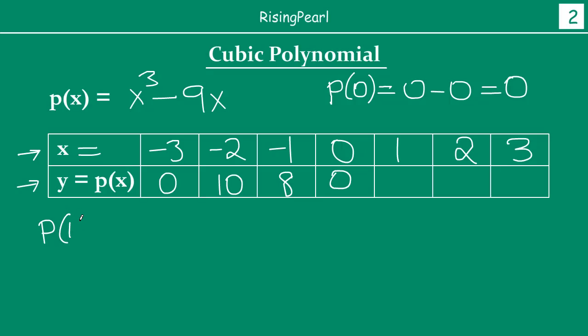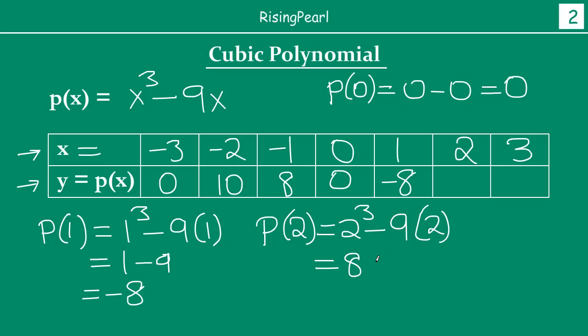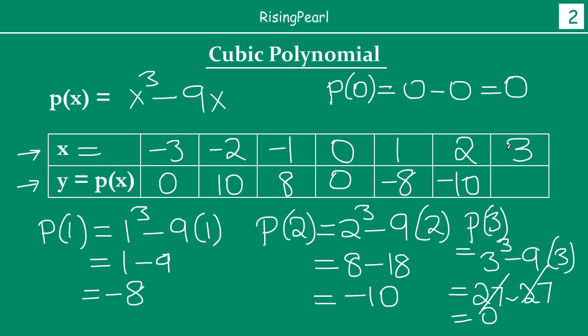So let's do for 1, 2 and 3. For p(1) it will be 1³ - 9 times 1. So 1³ is 1 minus 9, so minus 9 plus 1 is -8. This is -8. How about the value of the polynomial at x = 2? That will be 2³ - 9 times 2. So 2³ is 8 minus 18, so this will be -10. Minus 10. Now similarly for 3, p(3) will be equal to 3³ minus 9 times 3. So this will be 27 minus 27, 0. So this value is 0.